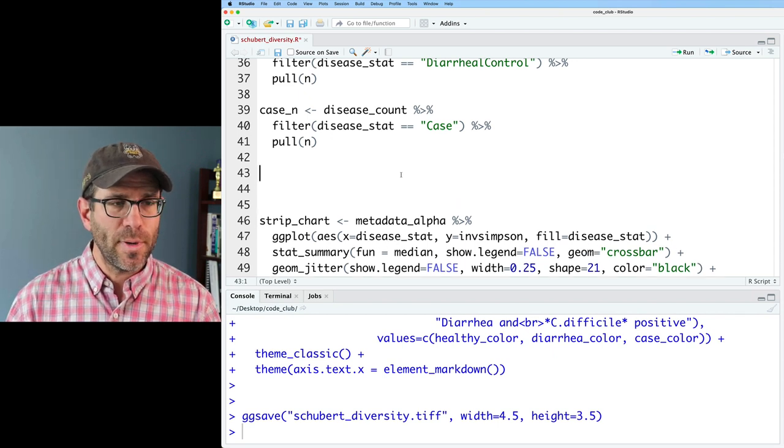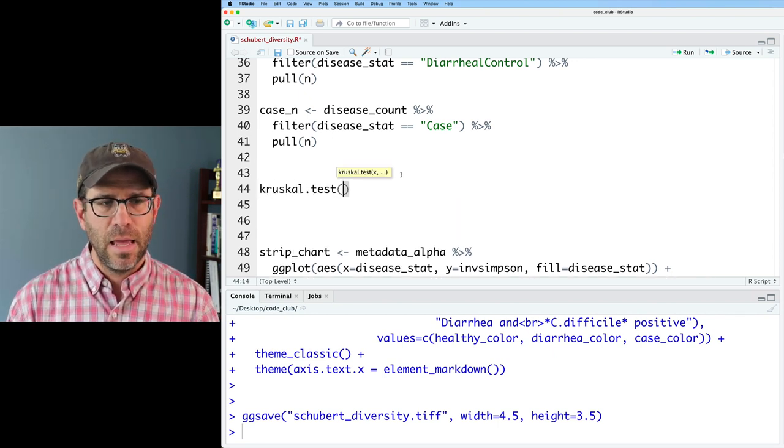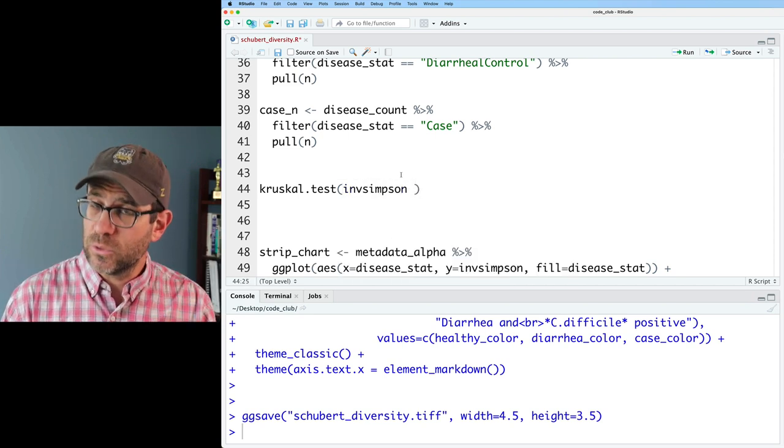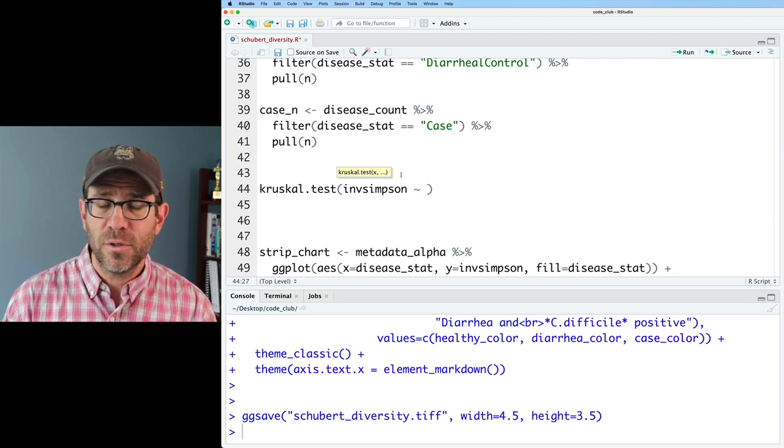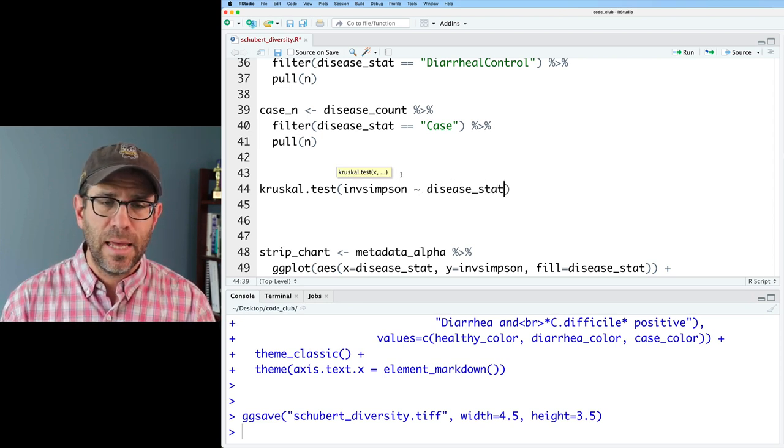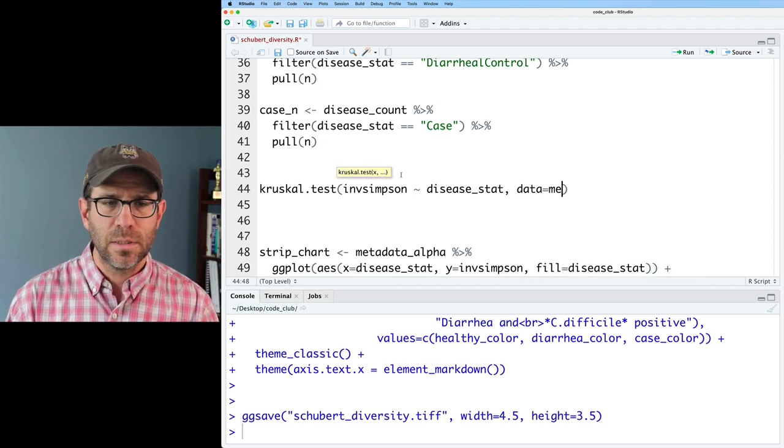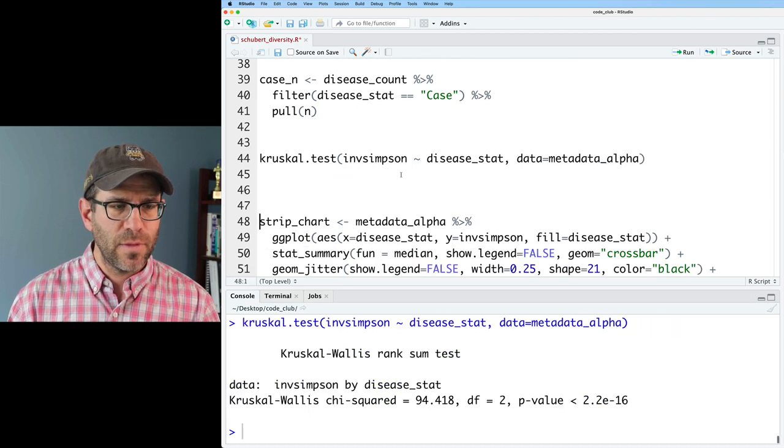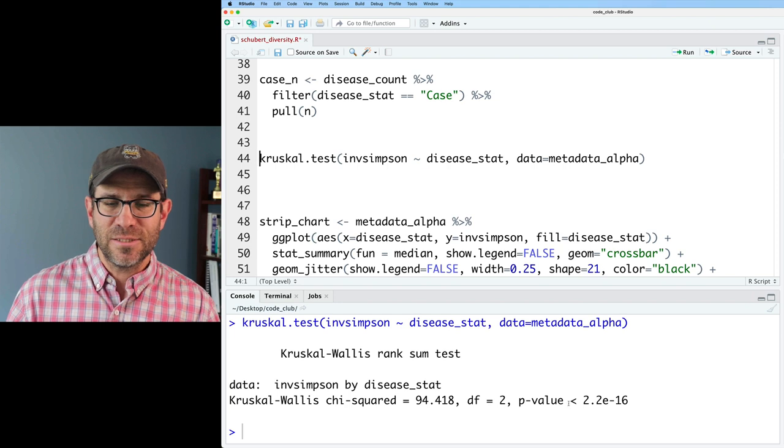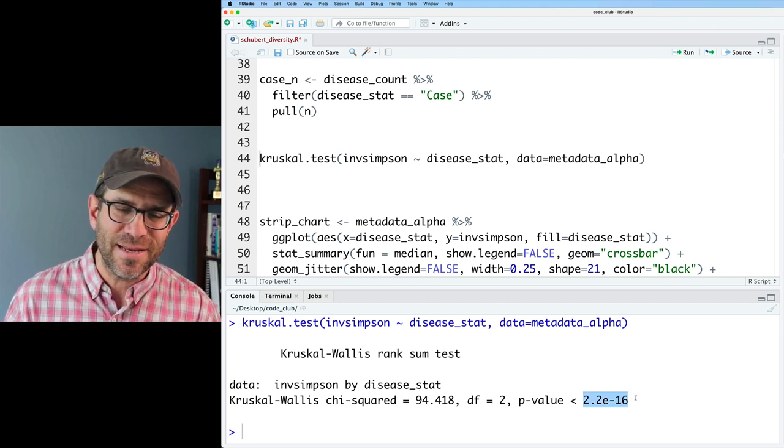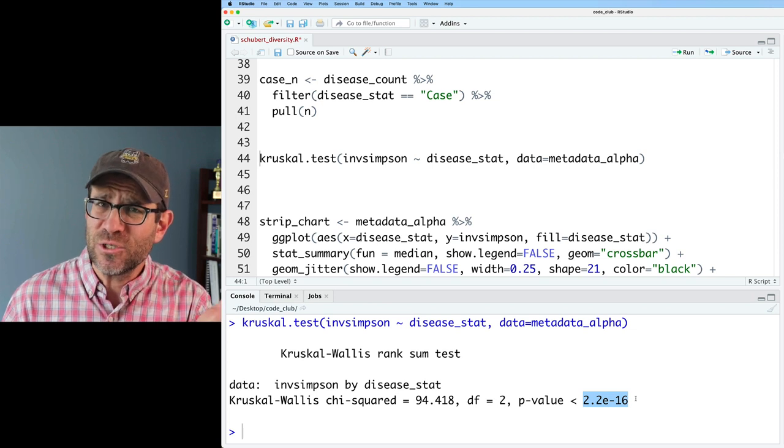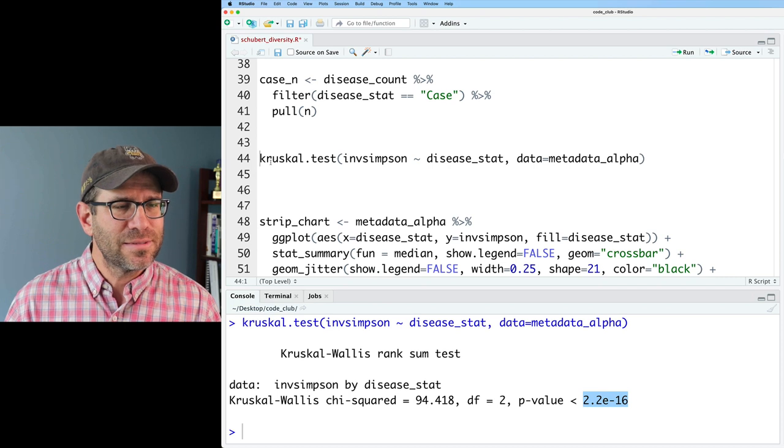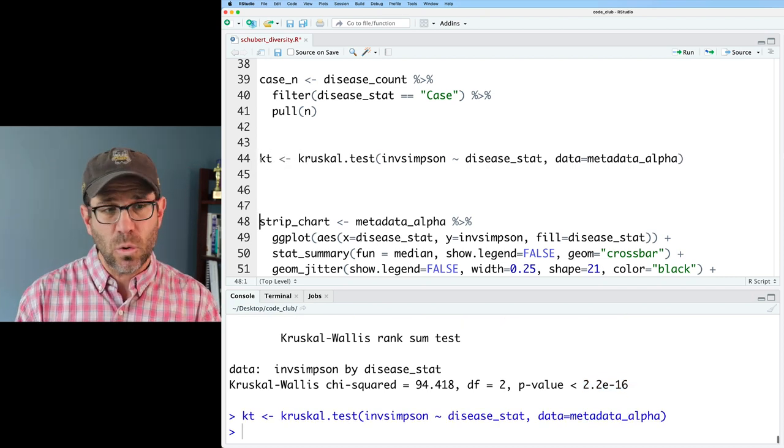To get started, we'll open up some space here in the code and do kruskal.test. We will do invsimpson for the column that we want to test, and we'll use the tilde for the formula notation, then we'll do disease_stat. Then we can do data equals metadata_alpha. If we run that, this is the output that comes to us, showing we have a tiny p-value, 2 times 10 to the minus 16 or smaller. I wonder how many stars you'd want for that, like 16 or so? Please don't. So let's call this variable kt and we will store the output there.